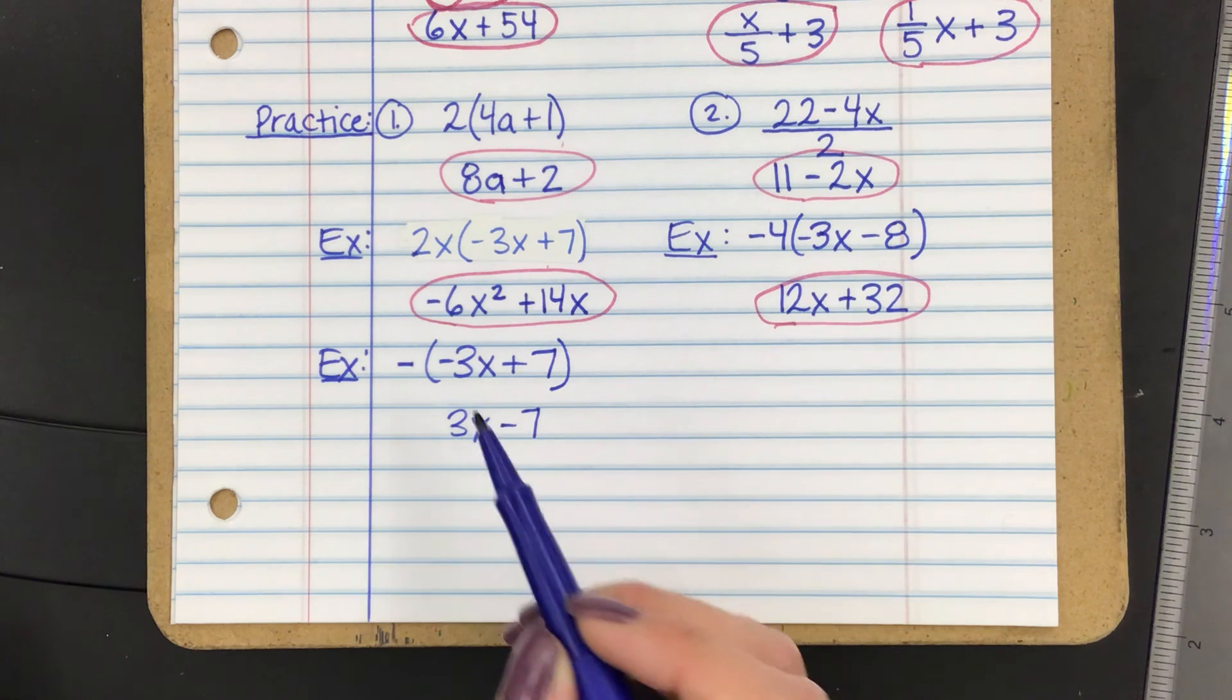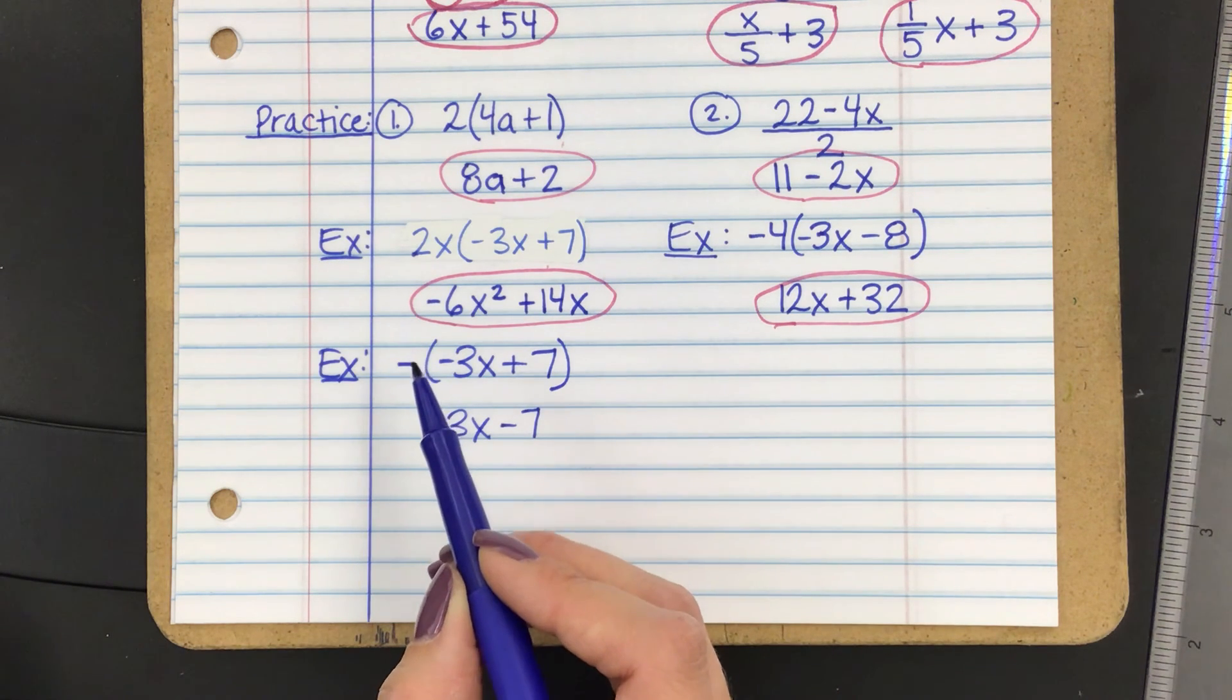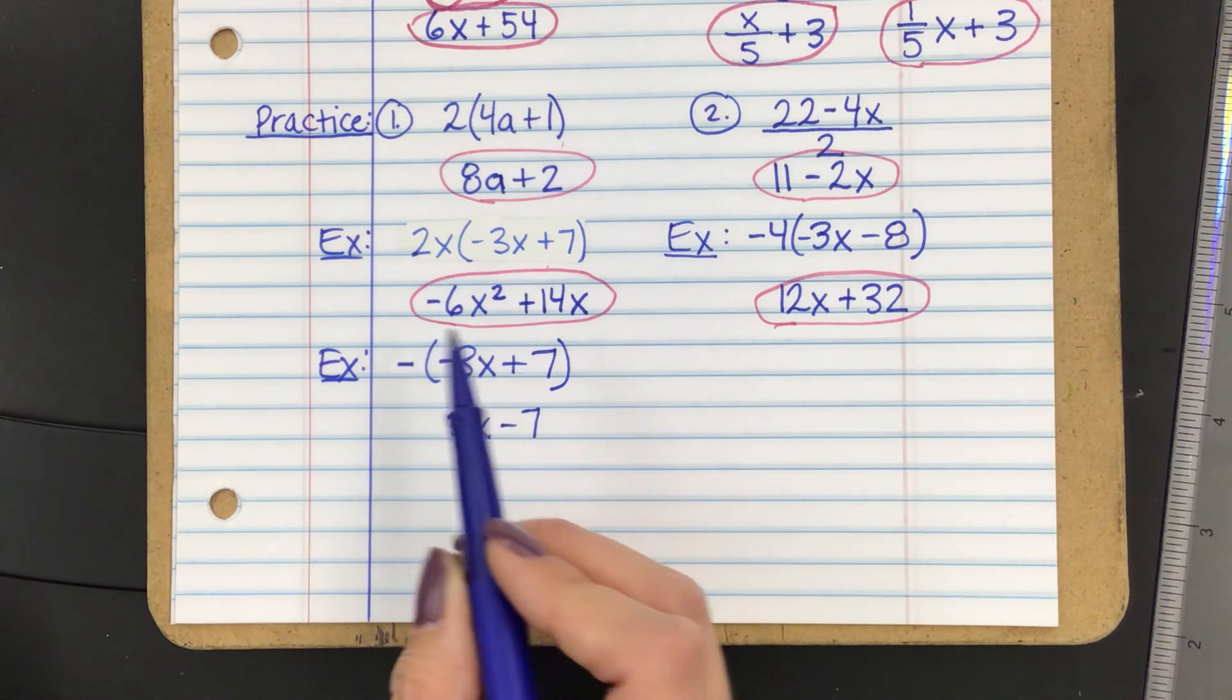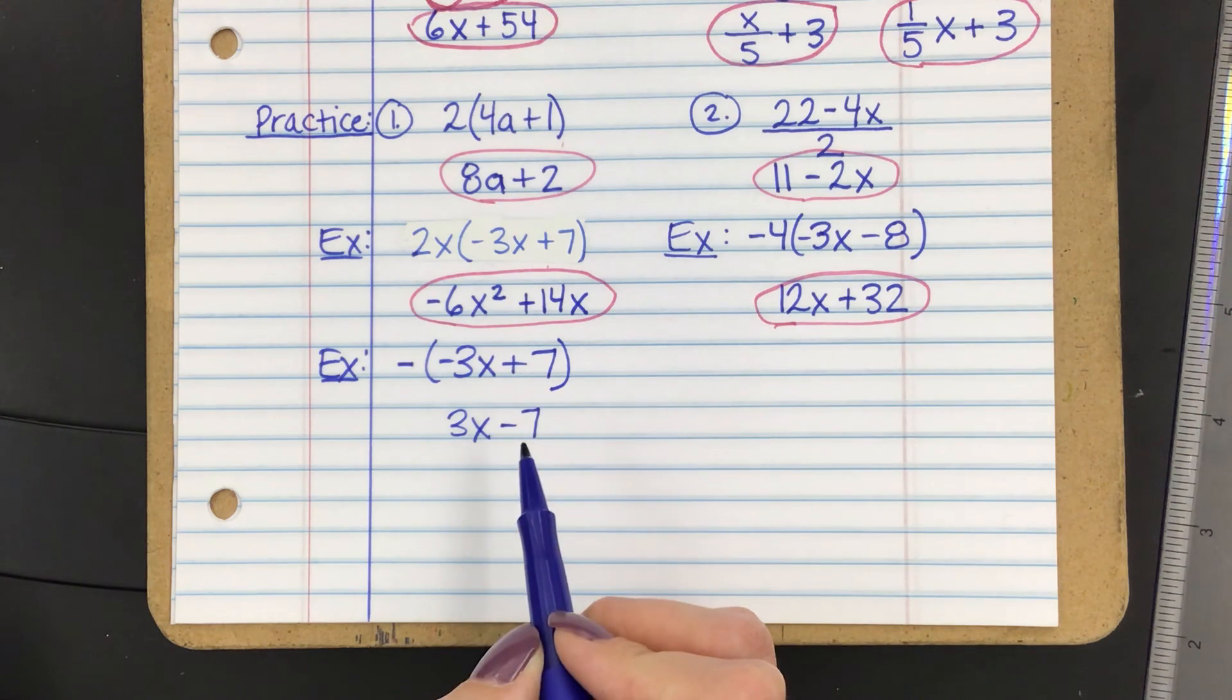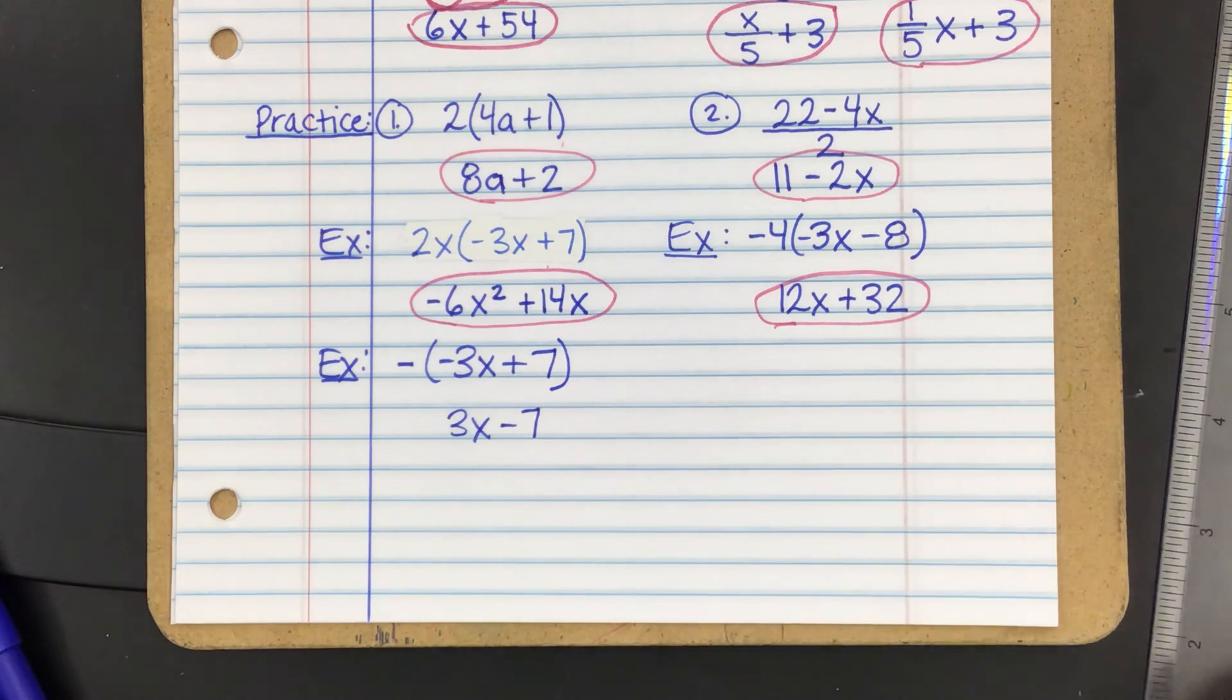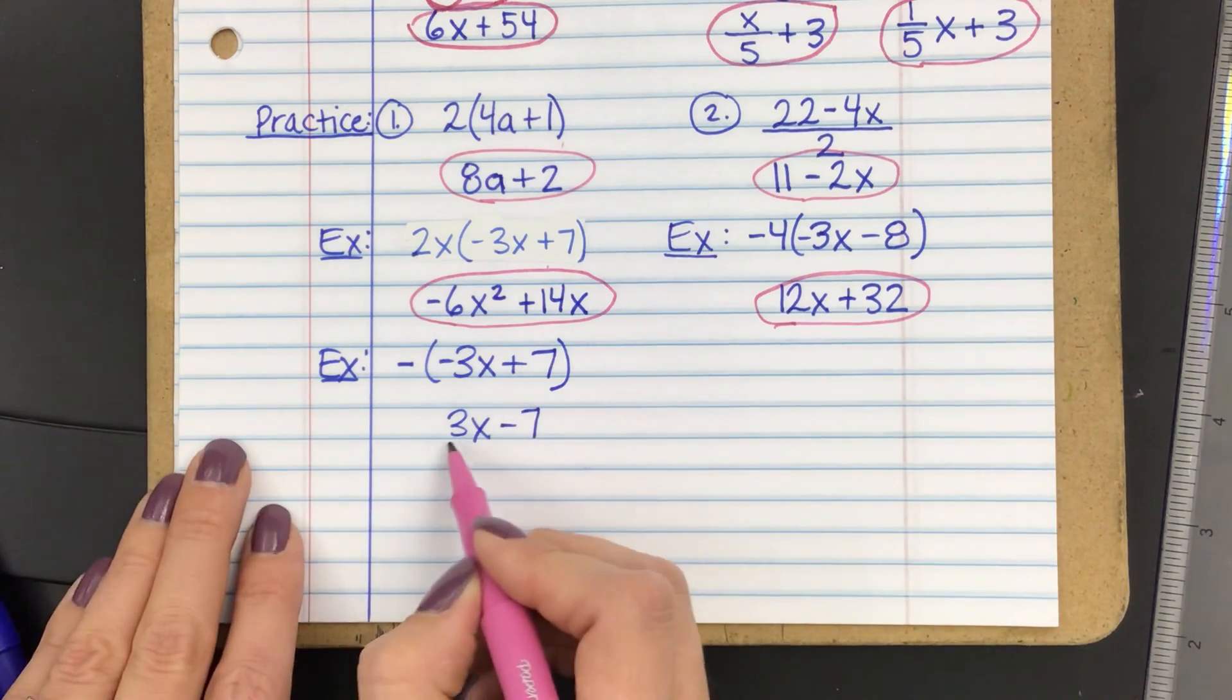So let's write that down. So the opposite of negative 3x is positive 3x. The opposite of positive 7 is negative 7. And if you did want to put a little 1 here, then negative 1 times negative 3x is a positive 3x. Negative 1 times positive 7 is negative 7. So you get the same thing no matter what. I wanted to make sure I showed you this example because it's really important.